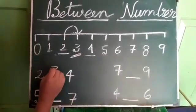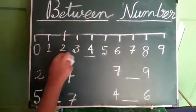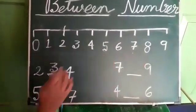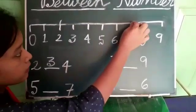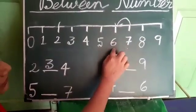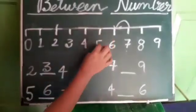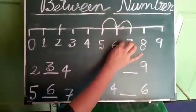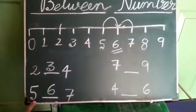Similarly, can you tell me which number is the between number of 5 and 7? Between 5 and 7, you can always do forward counting as well as backward counting. By backward counting: before 7 there is 6. Also by forward counting: after 5 there is 6. So we can always write 6 — it is the middle number, or the between number, of 5 and 7.